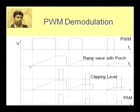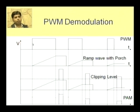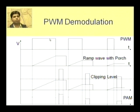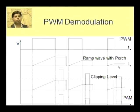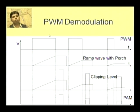The value of the ramp in the ramp signal will depend upon the width of the pulse. So we will have different ramp signals with a porch. The height of these ramp signals is varying according to the width of the PWM signals.